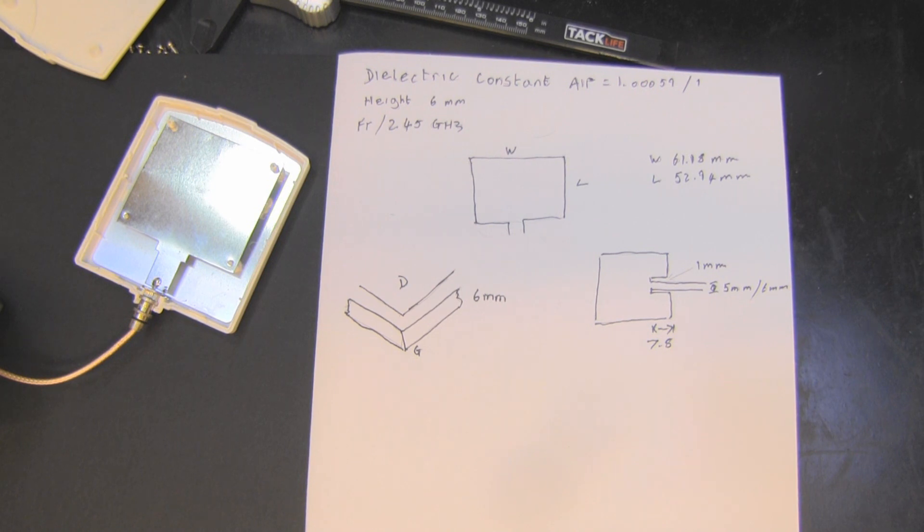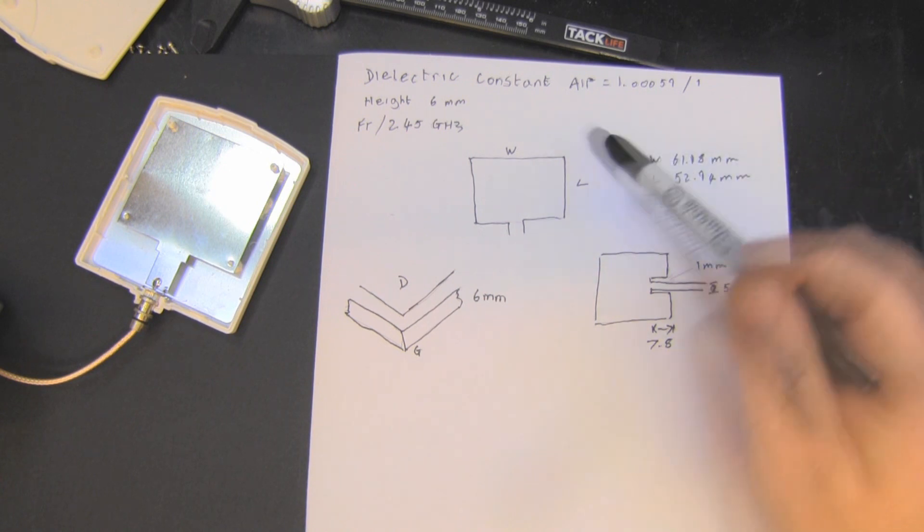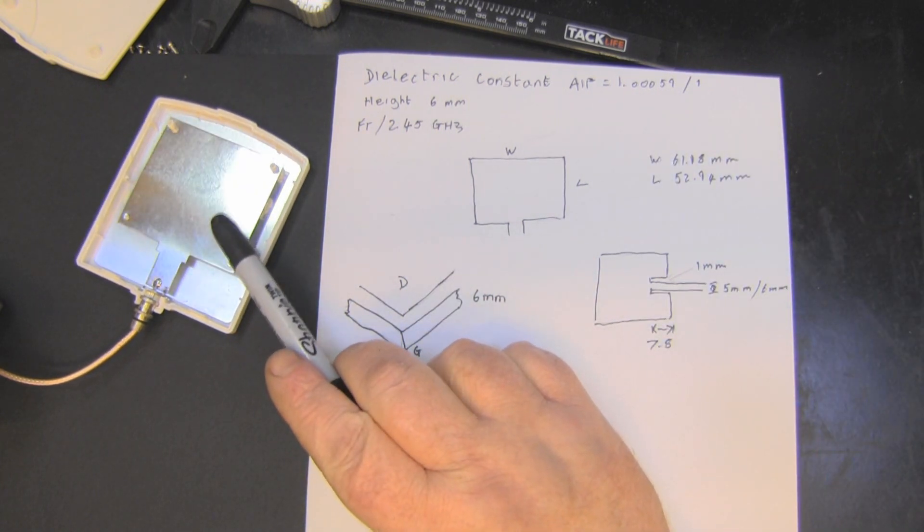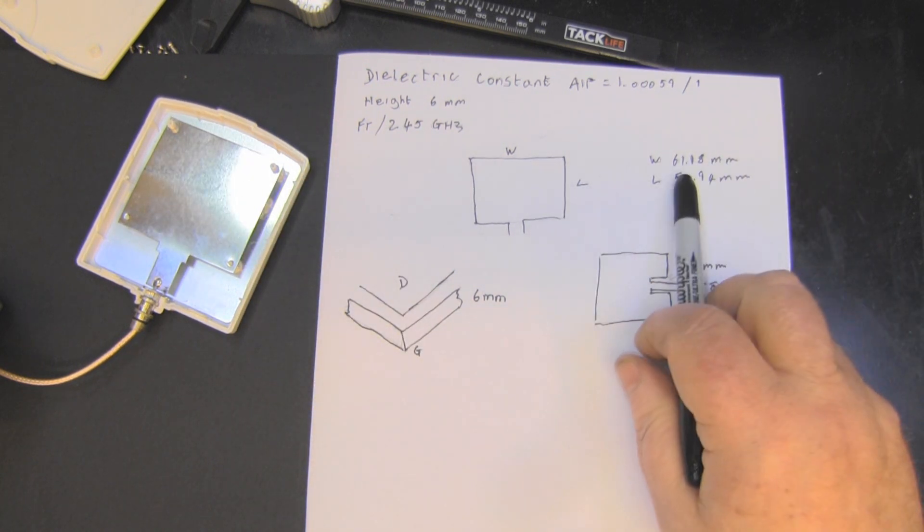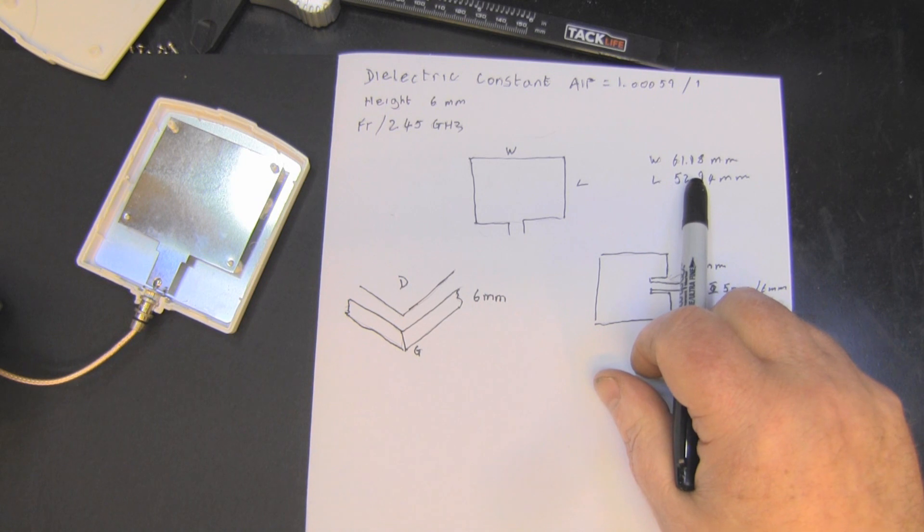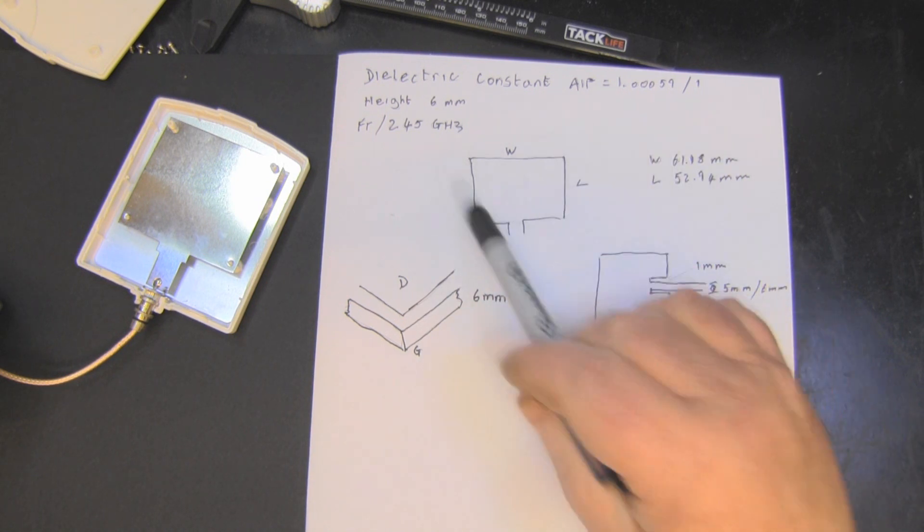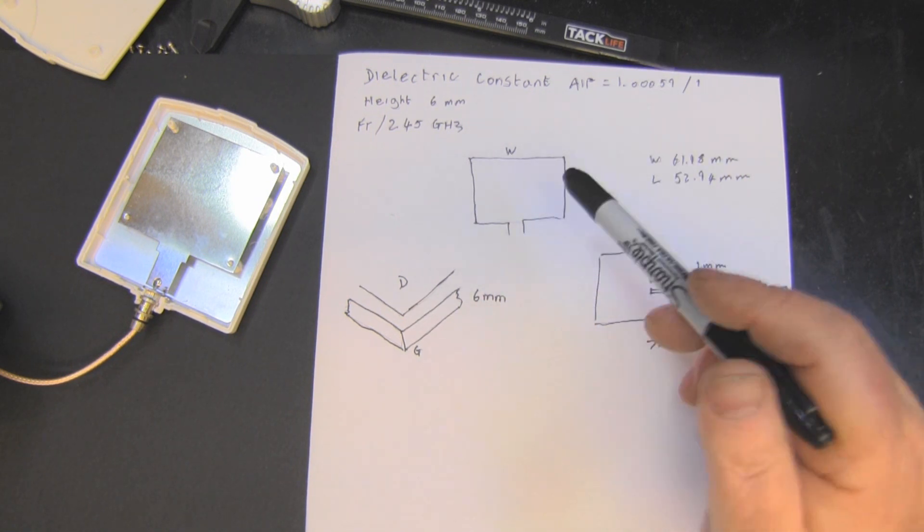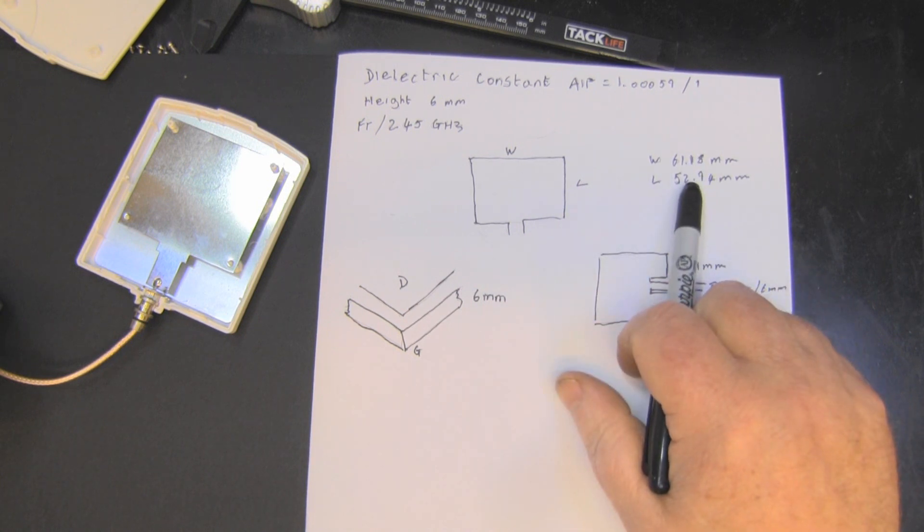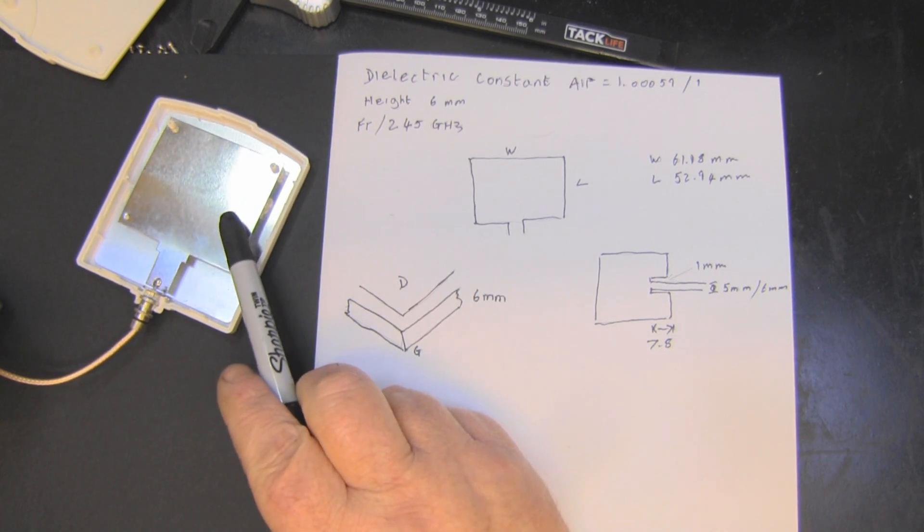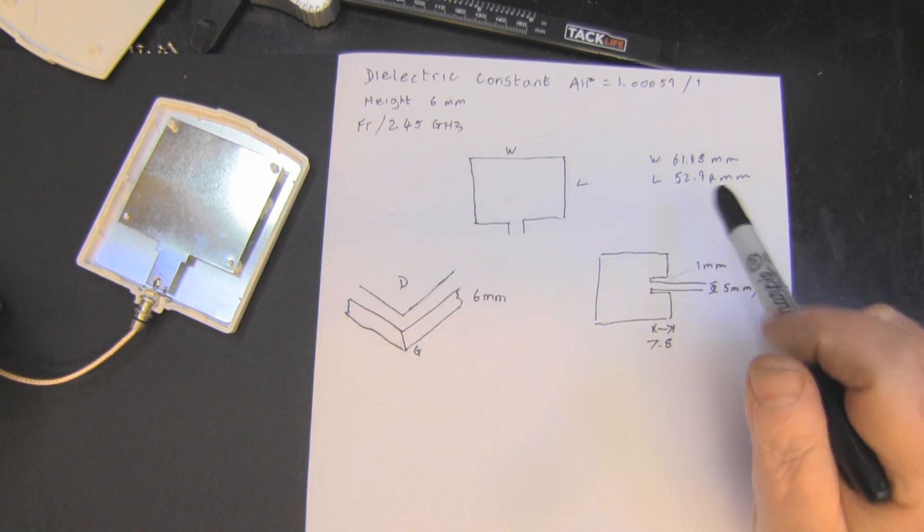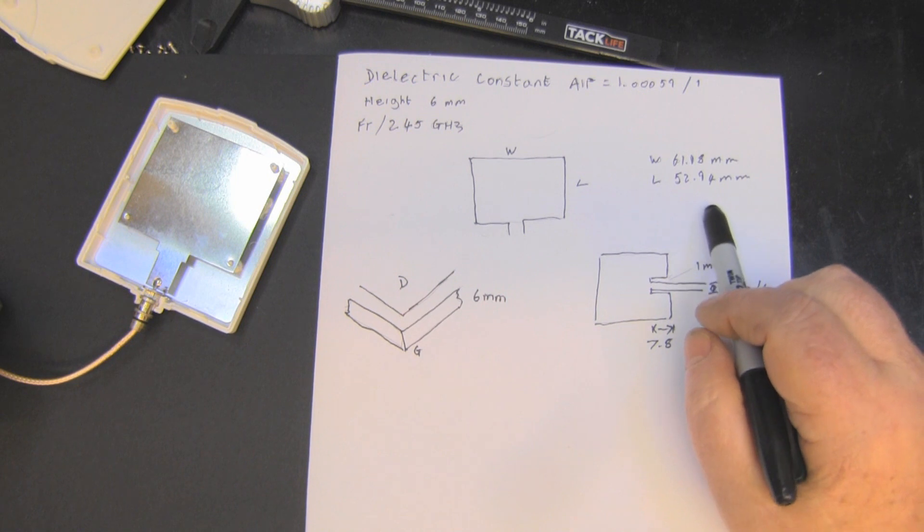But the measurements differ a little bit from the measurements that I use. The width of this one here is 58 millimeters. Now the width that I use is 61.18 millimeters. And if you put these into the website that I'm going to link below, you'll come up with the same answer for the width. The length on this one is 52.4 millimeters. The width on mine is 52.94 millimeters. So again, it's a fraction out but only a fraction.